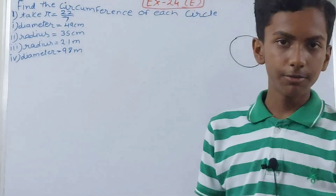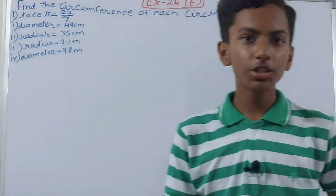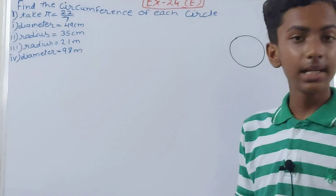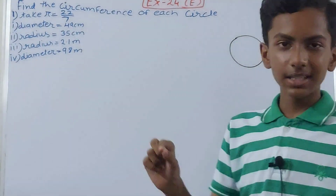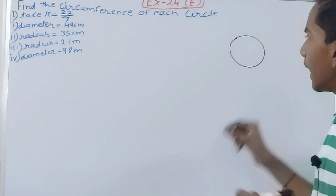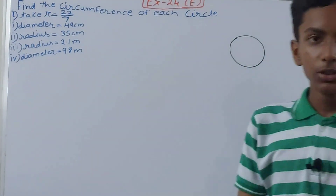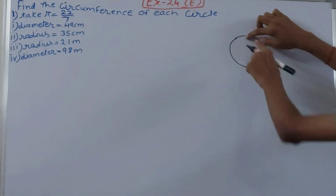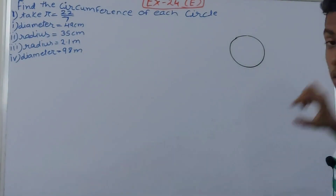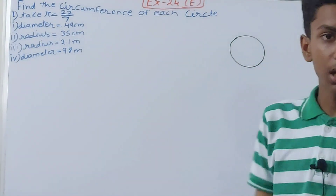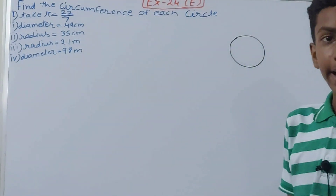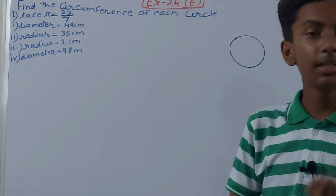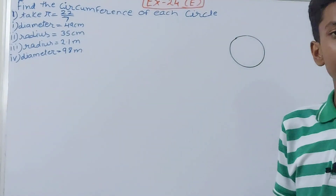Suppose this is my circle — if I measure the boundary of the circle, that length is the circumference. Now, how can we measure it? Since a circle is a rounded figure, we cannot use a ruler. So what we do is take a very fine string or thread, put it around the circle, and then measure the length of that string covering the circle. That is your circumference.